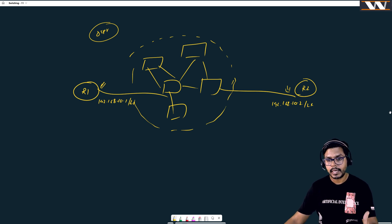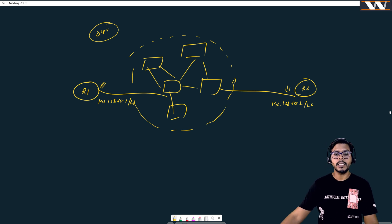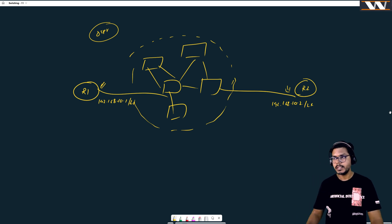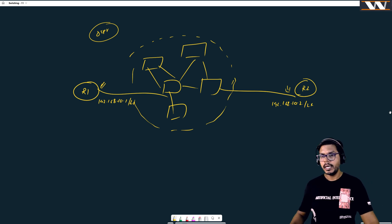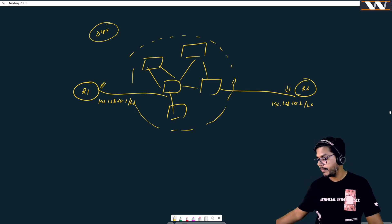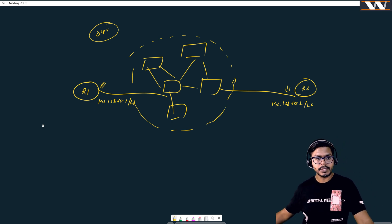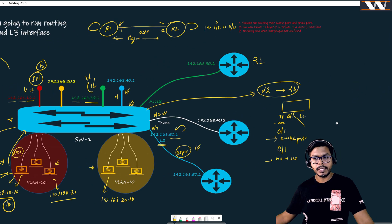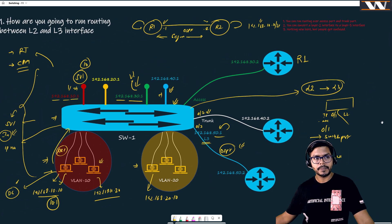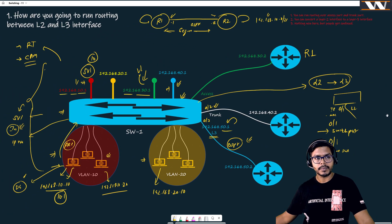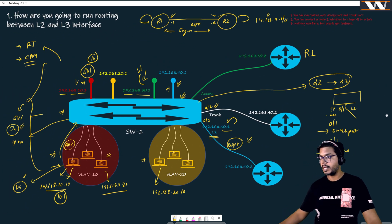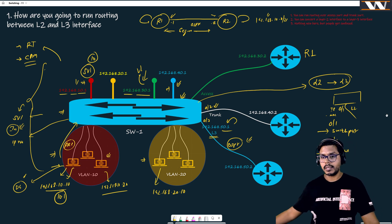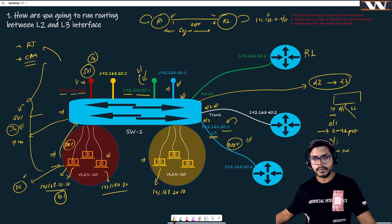Do not get confused that routing protocols need to be on the same physical link. They are not on the same link — they are on different links — but they are on the same segment. If you can provide connectivity between 10.1 and 10.2, routing protocols can come up. We will be getting into this when we try to design a network. If you have any doubt on this board, please do ask.